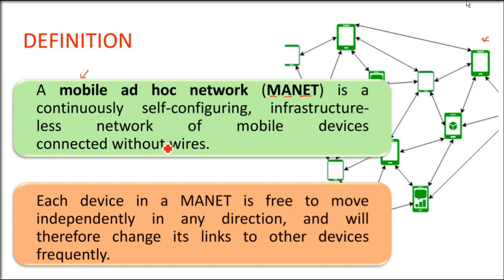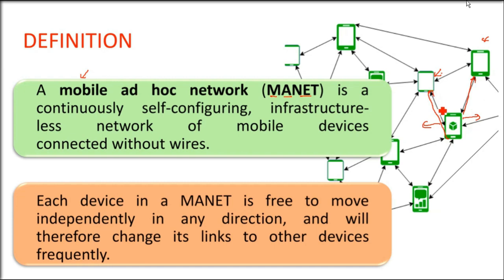These nodes are connected without wires — wireless communication is happening, there is no wire in between. These are different gadgets, different nodes moving here and there. Sometimes a node will be in the network, sometimes it will not. Each device in a MANET is free to move independently in any direction. It may link with one node or another, so links are also changing very frequently in very short time.